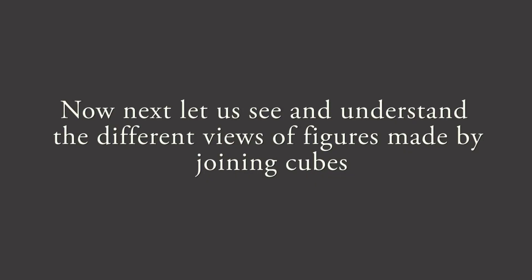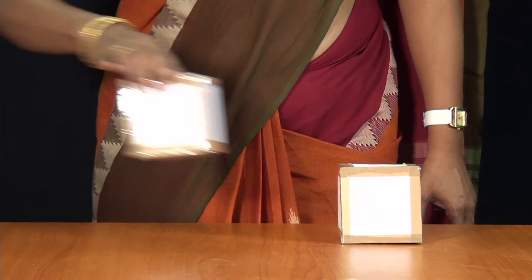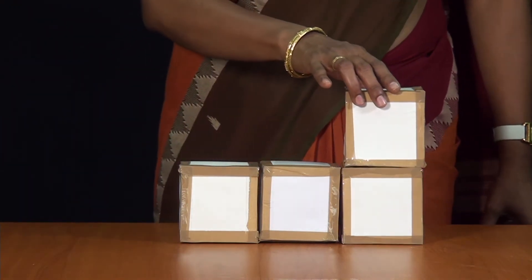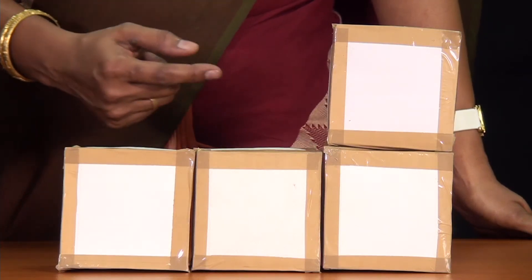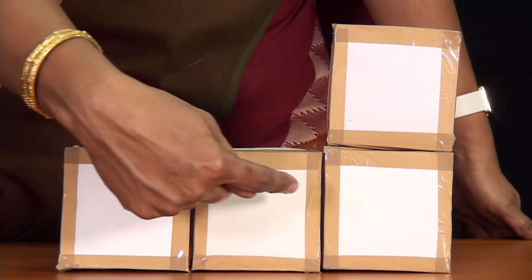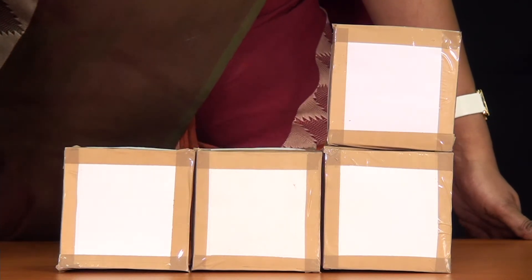Now let us see and understand the different views of figures made by joining cubes. Let us arrange the cube in the form of a solid this way. Let us now look at the objects from the front. What do we observe? Yes, there are 4 squares seen from the front.